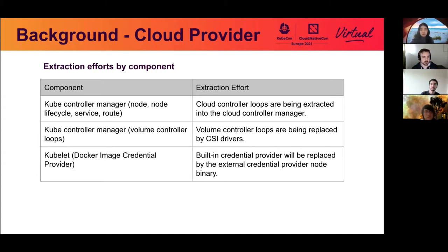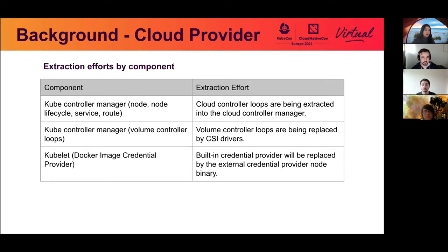I wanted to quickly go over each of the components that had cloud provider code and the extraction effort related to those. First, the kube-controller-manager had cloud provider related code in four of the controllers that would become the cloud controller manager: the node, the node lifecycle, the service, and the route controllers.